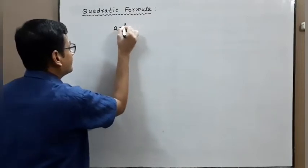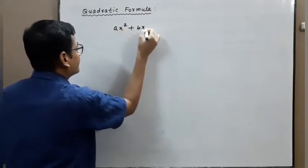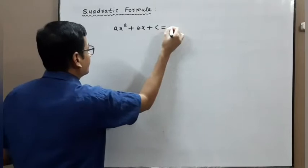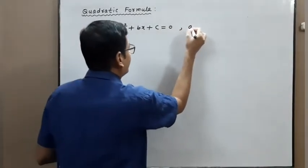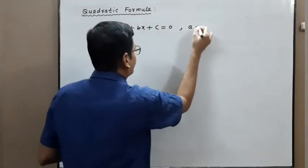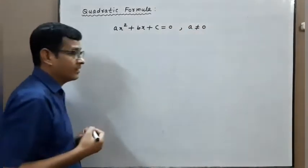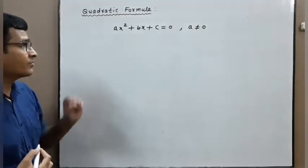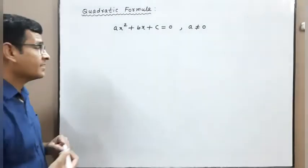x squared plus bx plus c equal to 0, where a not equal to 0, is called a quadratic equation. Now we will find the solution of this quadratic equation by completing the square.